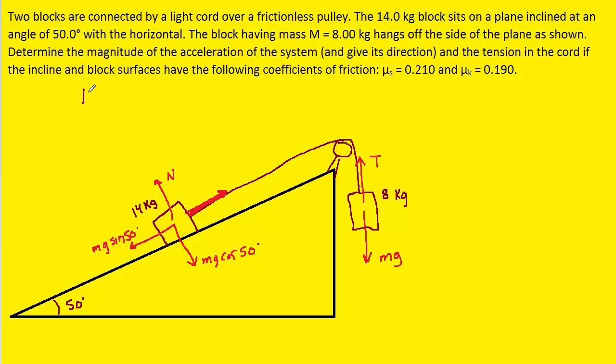which is 14 kilograms, and multiply that by the sine of whatever angle the incline is making, which is 50 degrees. Now, in this case, 14 times sine of 50 is about 10.7, and that is indeed greater than the 8 kilograms that's hanging off the edge.